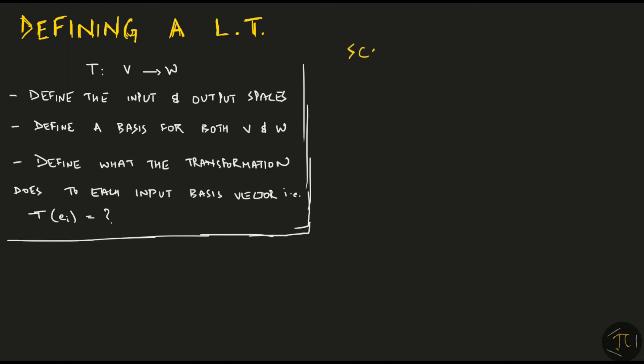Let's look at an example of scaling a 2D space. The transformation takes vectors from R² and gives back vectors in R². A nice basis for the input space R² is the vectors i hat and j hat, and let's use the same basis for the output space as well. Now we need to define what the transformation would do to each basis vector. Let me define it in a way that it takes i hat, that is (1,0), and maps it to (2,0). And it maps j hat (0,1) to (0,2).